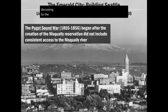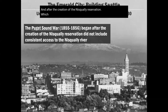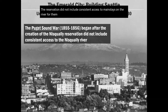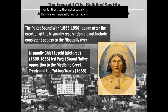The Puget Sound War from 1855 to 1856 began after the Medicine Creek Treaty was signed and after the creation of the Nisqually Reservation, which did not include consistent access to the river on which they had historically depended for fishing. Their reservation did not include consistent access to fishing mainstays on the river — so this deal was especially raw for the Nisqually.